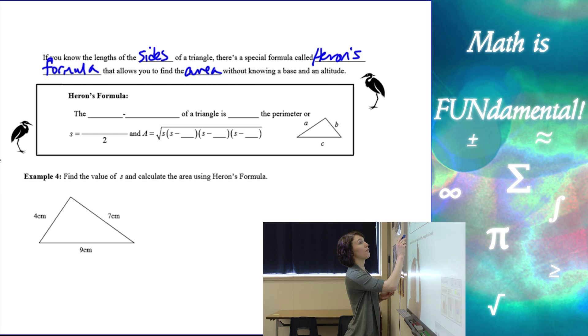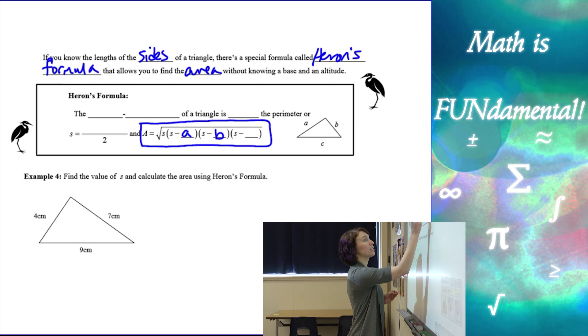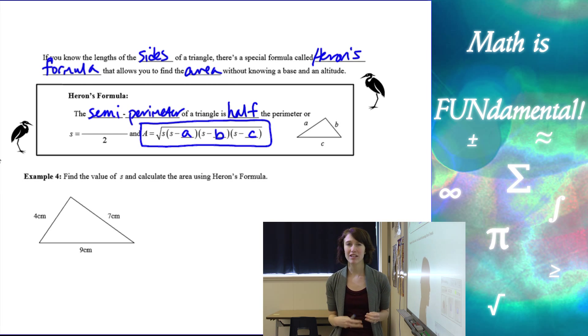So here we have a formula A equals the square root of S times S minus A times S minus B times S minus C. Now S is what we call the semi-perimeter of a triangle. And what a semi-perimeter is, it's half of the perimeter. So you can think like a semi-circle is half of a circle. A semi-perimeter is half of a perimeter.